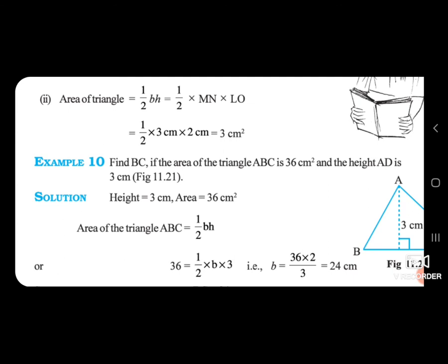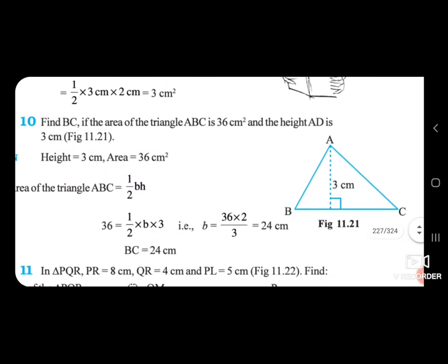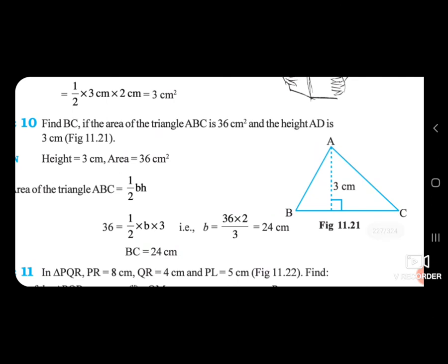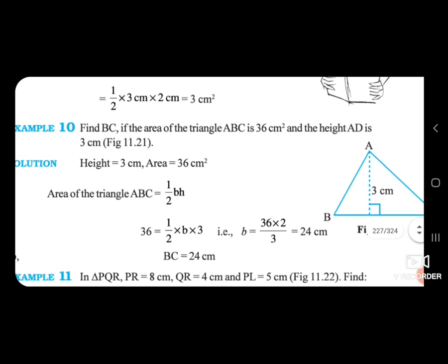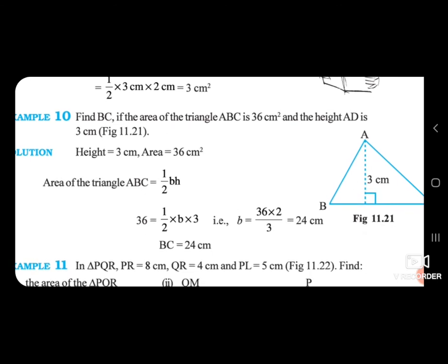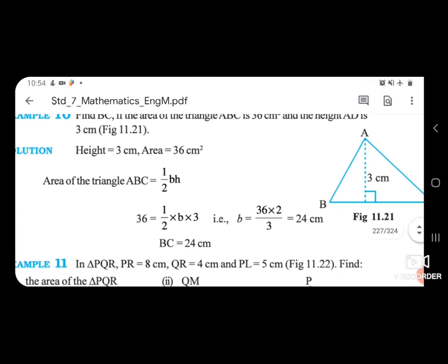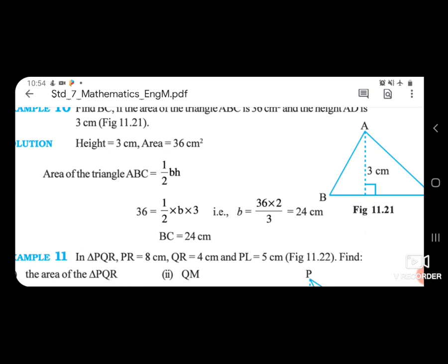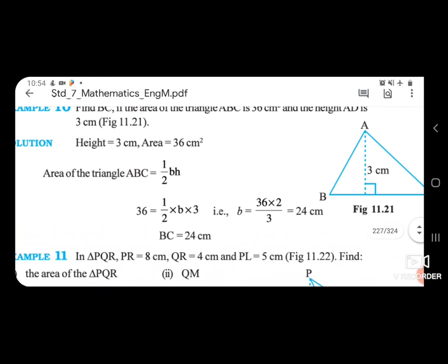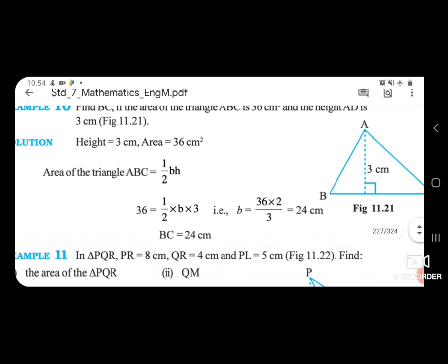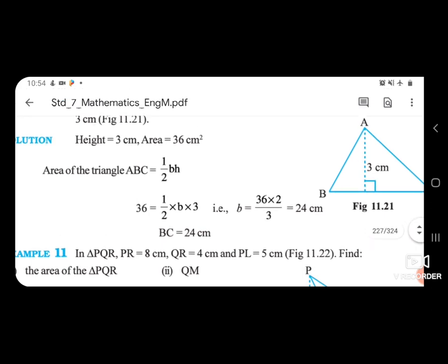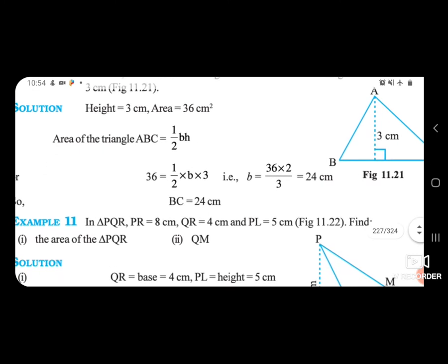Example 10: Find BC if the area of triangle ABC is 36 cm square and the height AD is 3 cm. Find base BC. Area of triangle ABC = 1/2 × B × H. So 36 = 1/2 × B × 3. Therefore B = 36 × 2 ÷ 3 = 24 cm. BC = 24 cm.